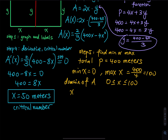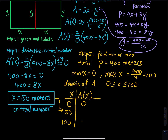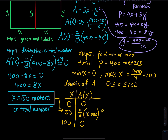We use a table. The minimum of x is 0, the maximum is 100, and the critical number is 50. Plug each into A of x. When x equals 0, the area is 0. When x equals 100, the area is 0 as well. When x equals 50, you get two-thirds times 10,000 — this is the largest area. So this is the absolute maximum when x equals 50. We have proved that the area is maximized at x equals 50.